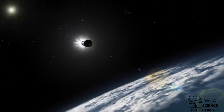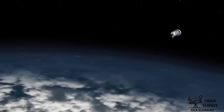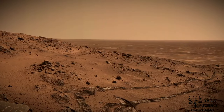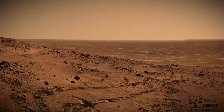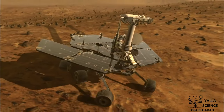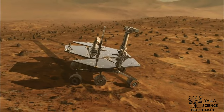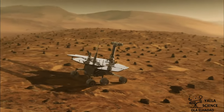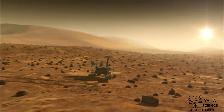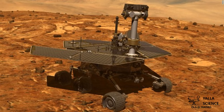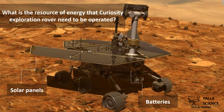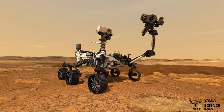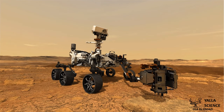Mars is 54 million kilometers away from Earth. Humans have sent many missions to explore the Mars planet. None of these missions included people, but they had robots which are operated remotely. The Mars Rover Curiosity, which travels on the surface of Mars, is one of the most well-known of these robots. What is the resource of energy that the Mars Rover Curiosity needs to be operated?